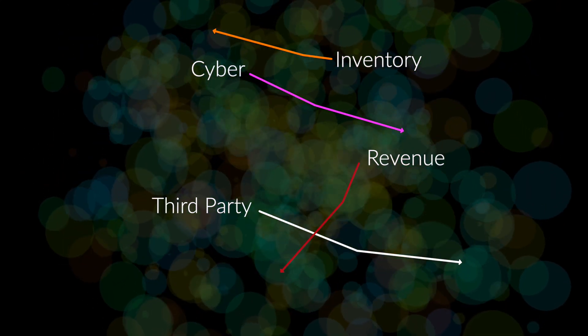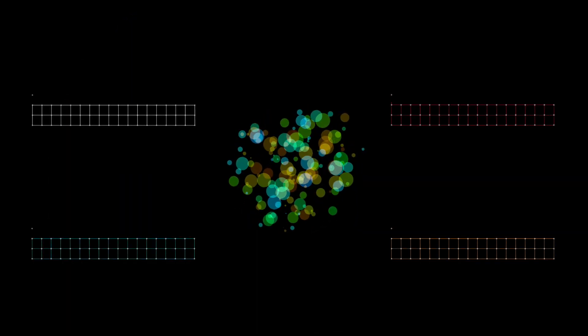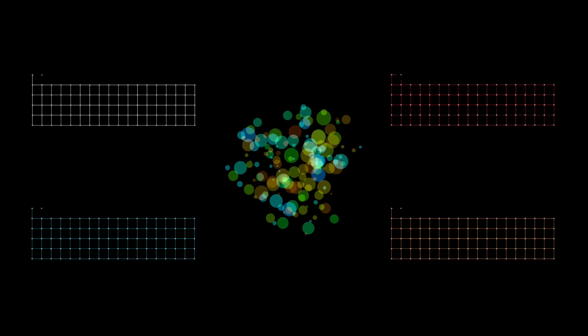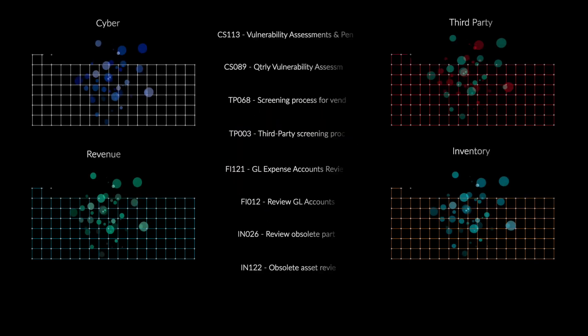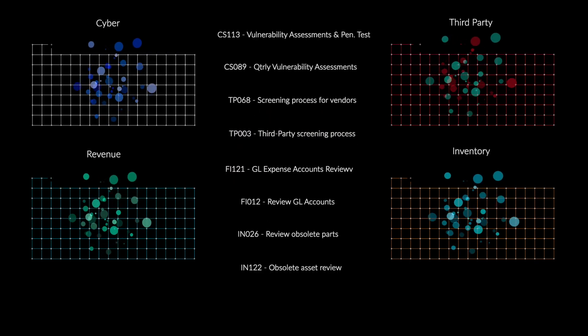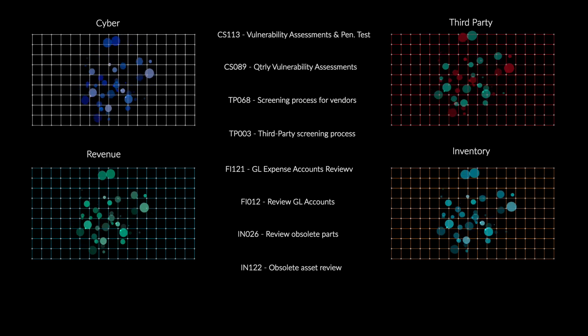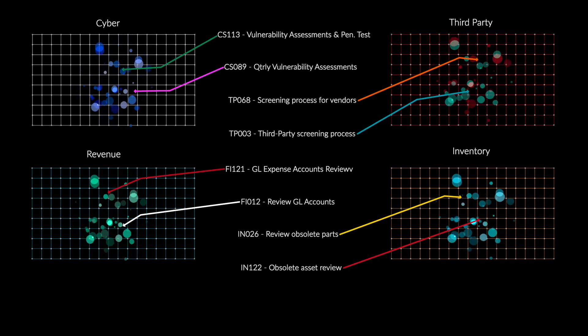We can map these controls to your risk universe and highlight areas of high risk in order to gain insights. And then finally, we can deploy text analytics and data science techniques in order to implement and identify clusters of similar controls.